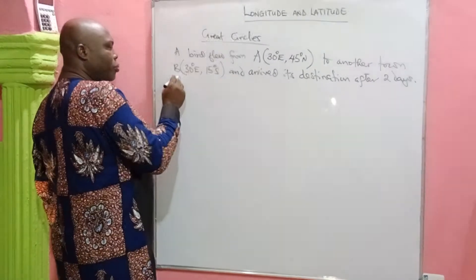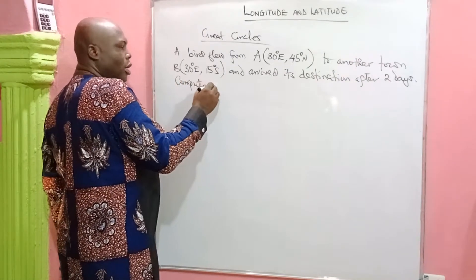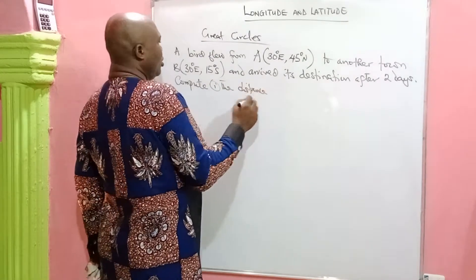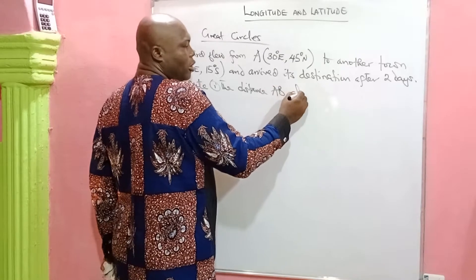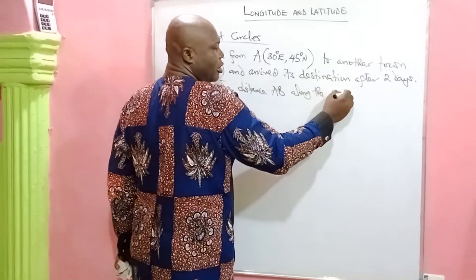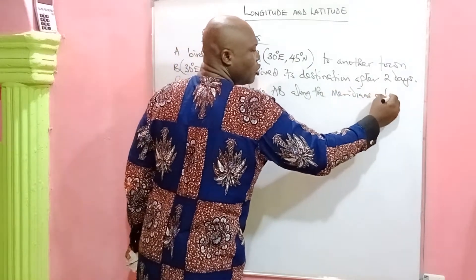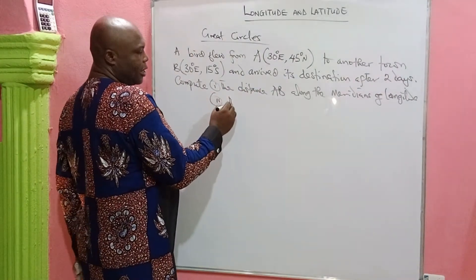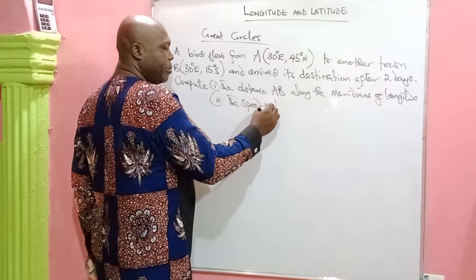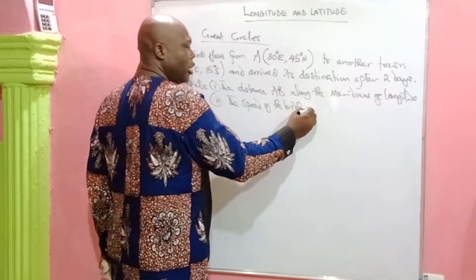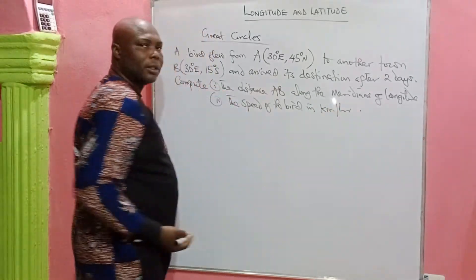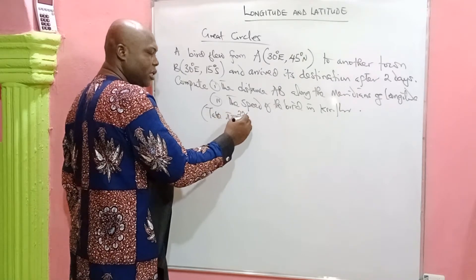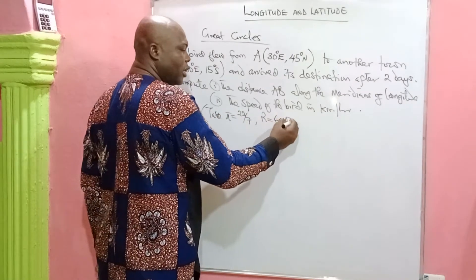We are asked to calculate: first, the distance AB along the meridians of longitude; and second, the speed of the bird in kilometers per hour. We are told to take pi as 22 over 7 and the radius of the Earth, big R, as 6,400 kilometers.